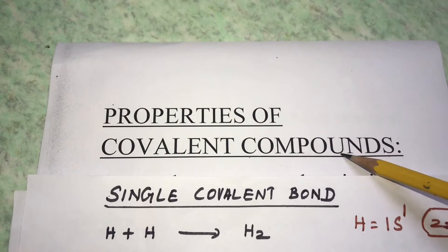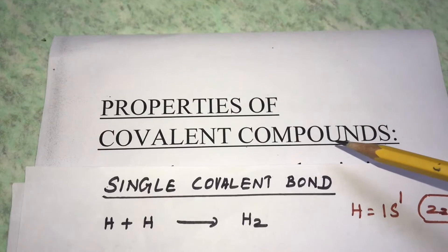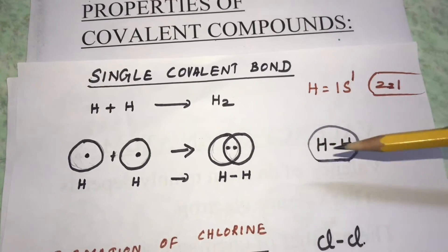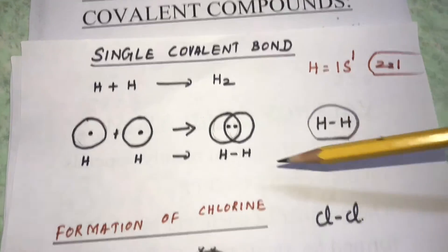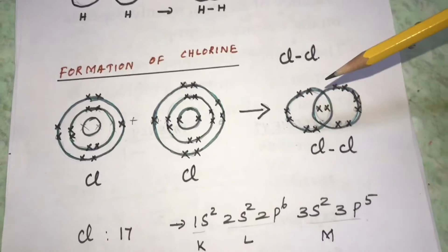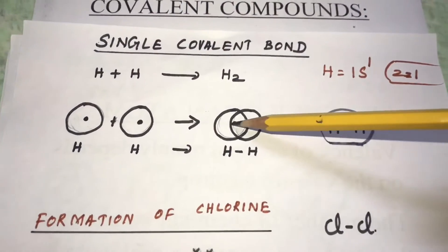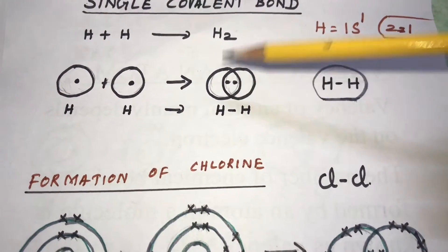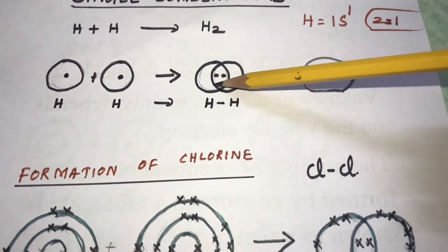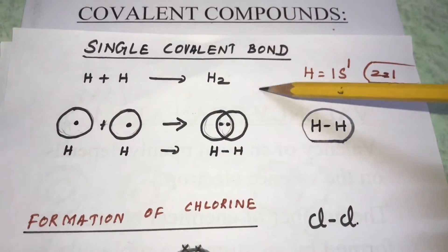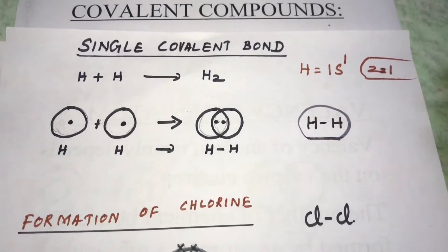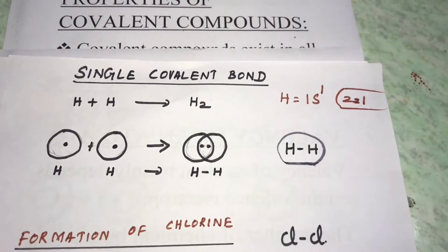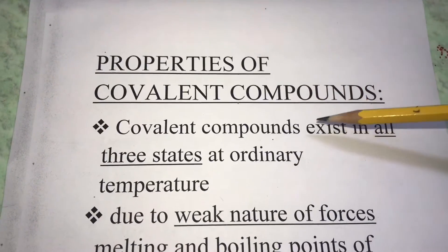In this video we are going to see the general properties of covalent compounds. Covalent bonding is formed by the mutual sharing of electrons between atoms. The atoms are present as separated atoms with shared electrons between them, so there is a very weak attractive force present between atoms in a covalent bond.